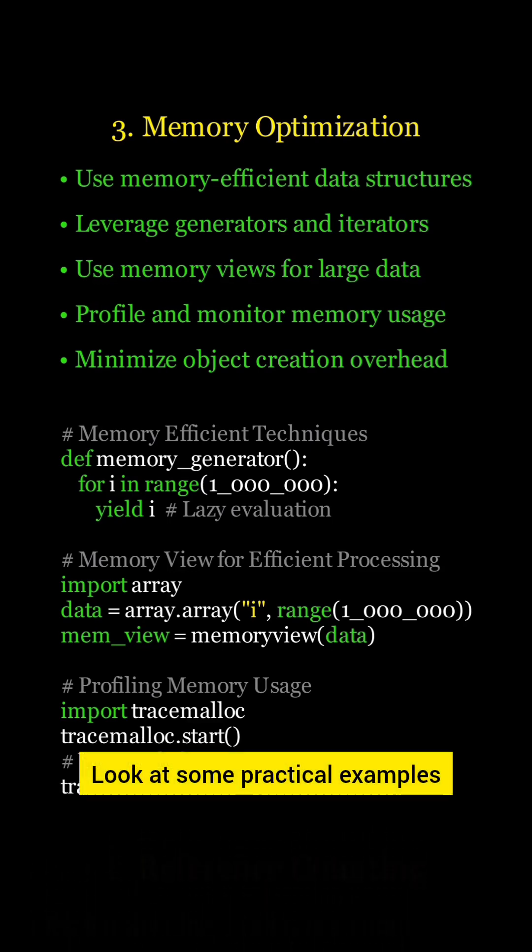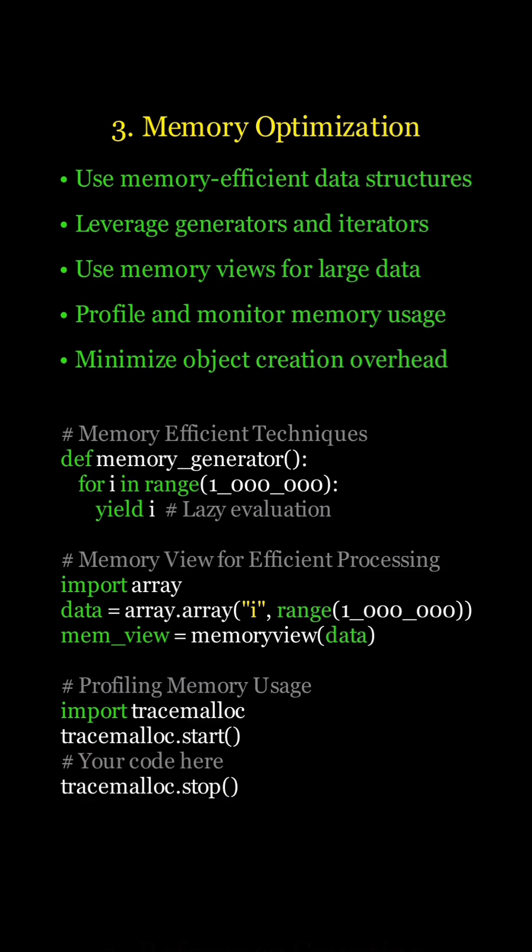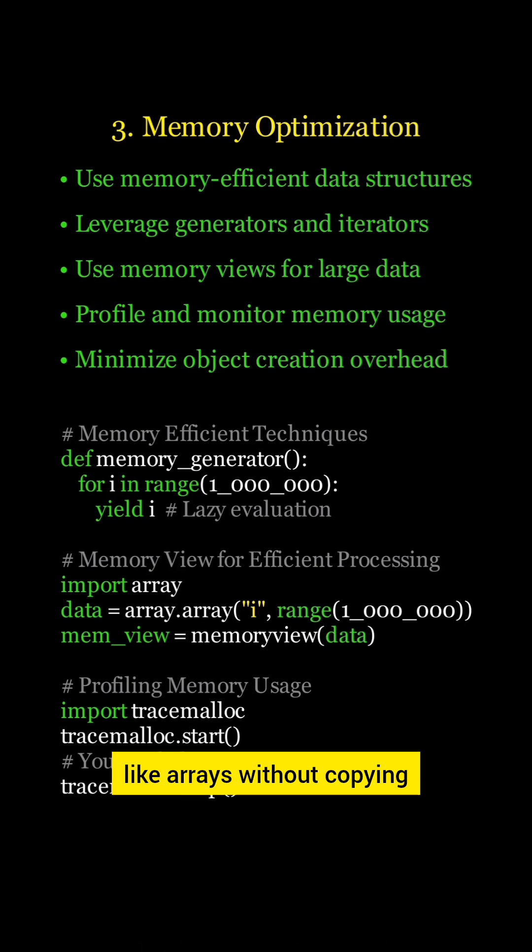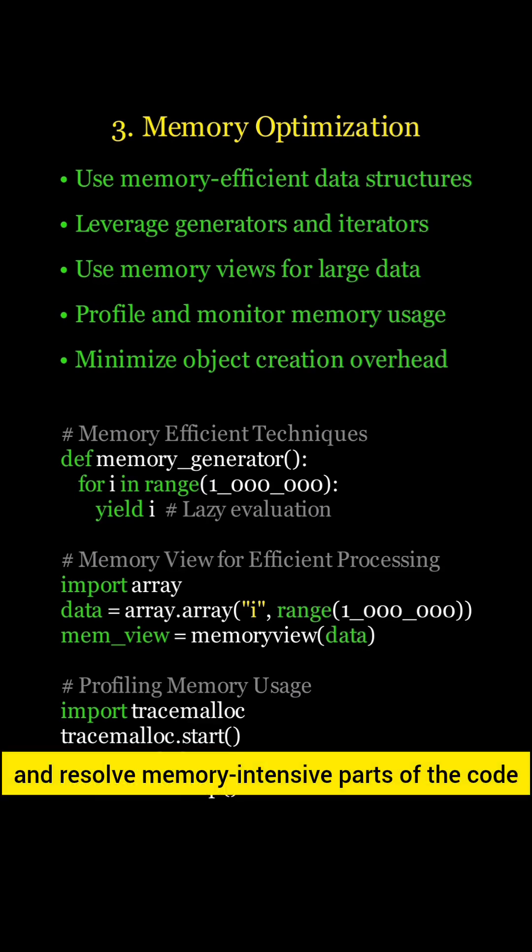Look at some practical examples. First, generators allow lazy evaluation, meaning they generate values on-the-fly instead of storing the entire sequence in memory. Memory views provide a way to access the internal data of objects, like arrays, without copying, which is incredibly efficient for large data sets. Python's tracemalloc module lets you track memory allocations, helping you identify and resolve memory intensive parts of your code.